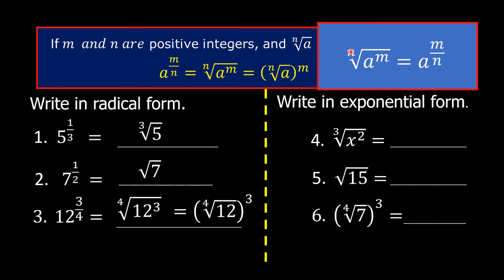Notice that the index n is the denominator of the fractional exponent, and the exponent of a, which is m, is the numerator of the fractional exponent. So in number 4, our answer is x raised to the exponent of 2 over 3. The exponent of x, which is 2, is the numerator of the fractional exponent, and the index 3 is the denominator of the fractional exponent.